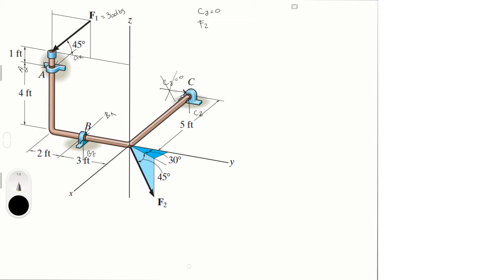To find the other forces in x, y, and z, we have to break down F1 and F2 into x, y, and z components in Cartesian vector form. For F1: F1x equals zero because it sits on the yz-plane; F1y equals negative 300 cosine 45, which is minus 212.13; and F1z equals minus 300 sine 45, which is also minus 212.13.